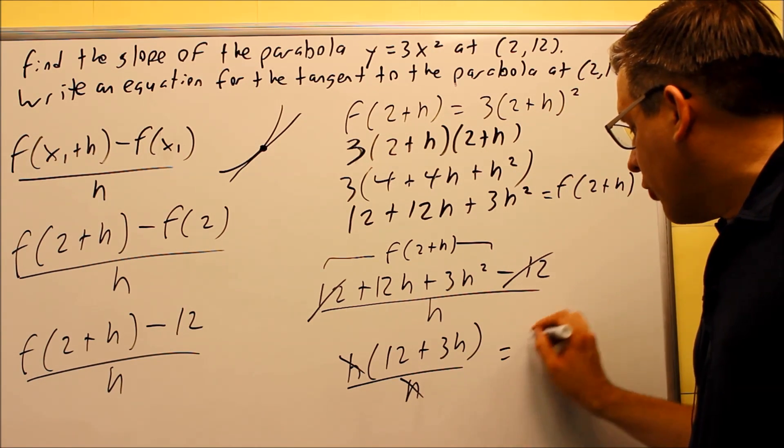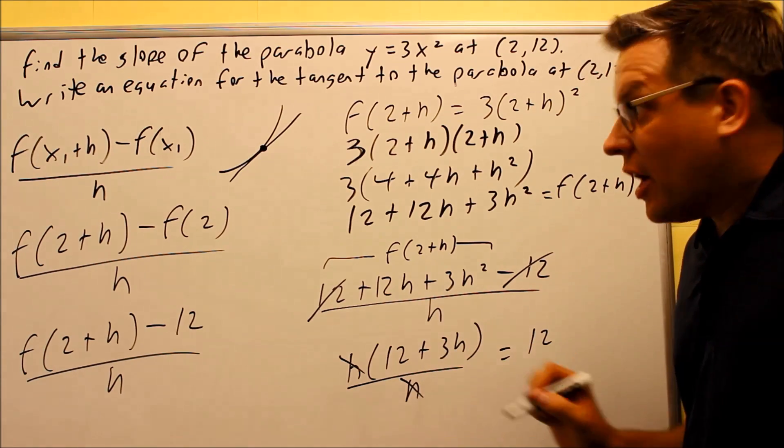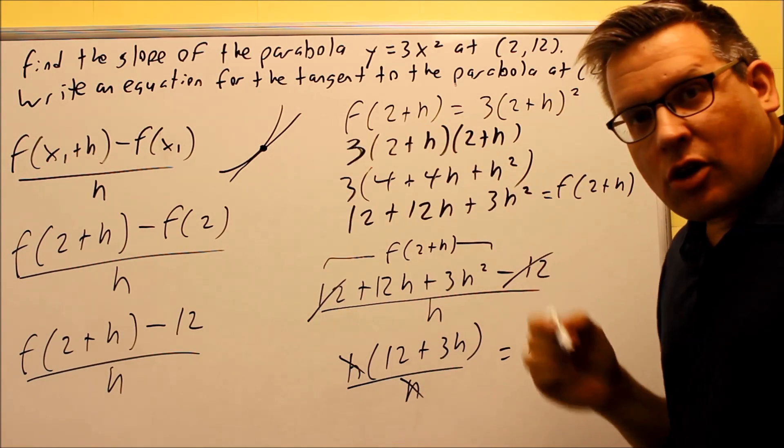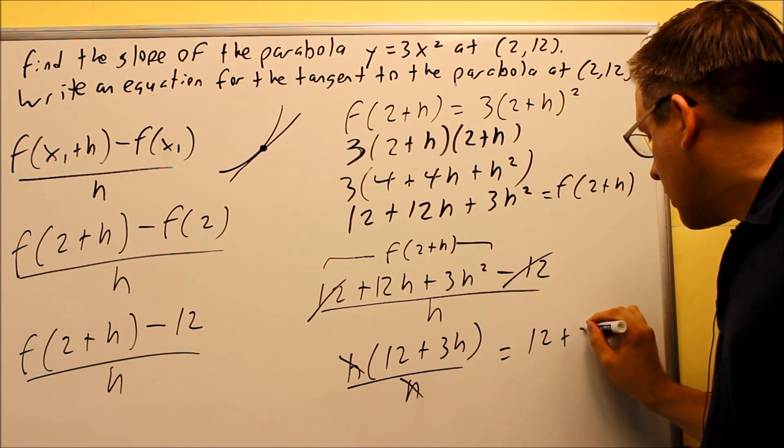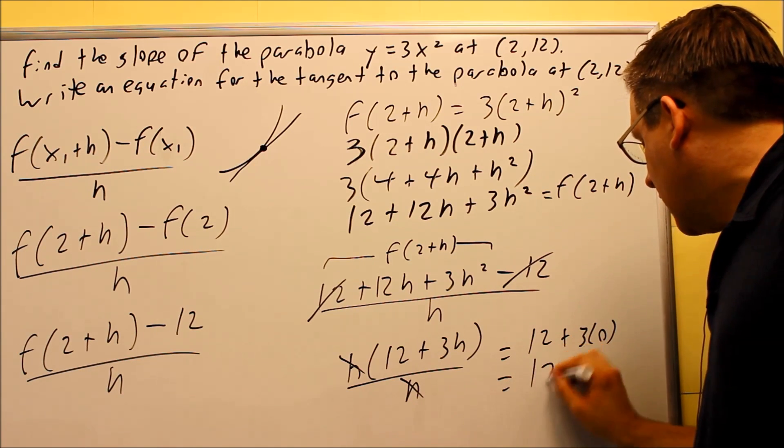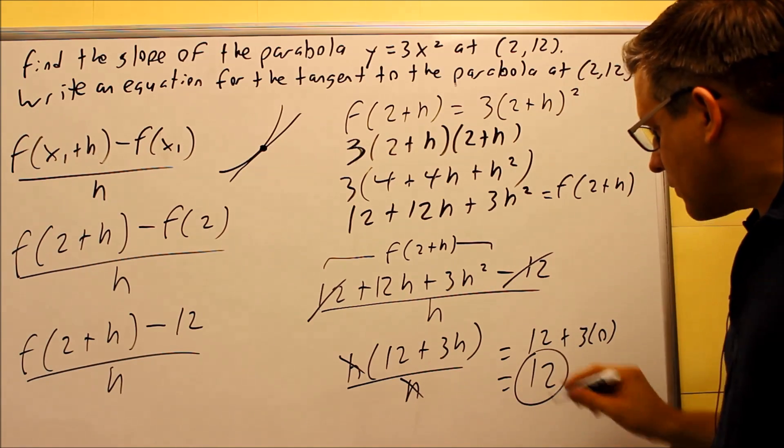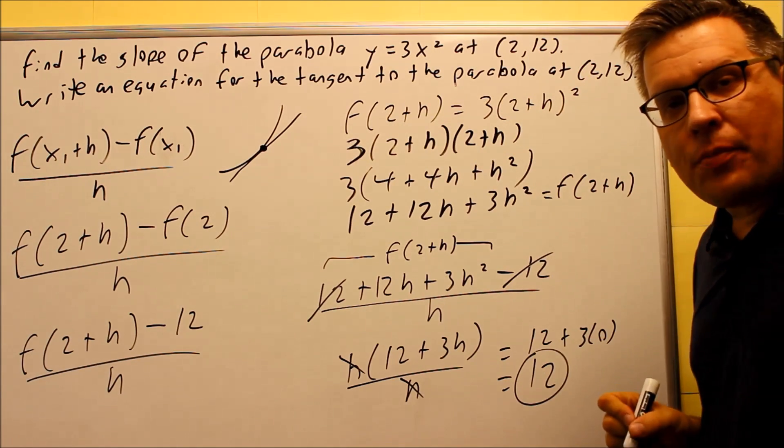h's are gone. So now I'm left with 12 plus 3h, but I mentioned that this distance is going to be minimized. That's going to go to 0. So you're going to do 12 plus 3 times 0, and that's going to give us 12. So 12 is the slope of the parabola.